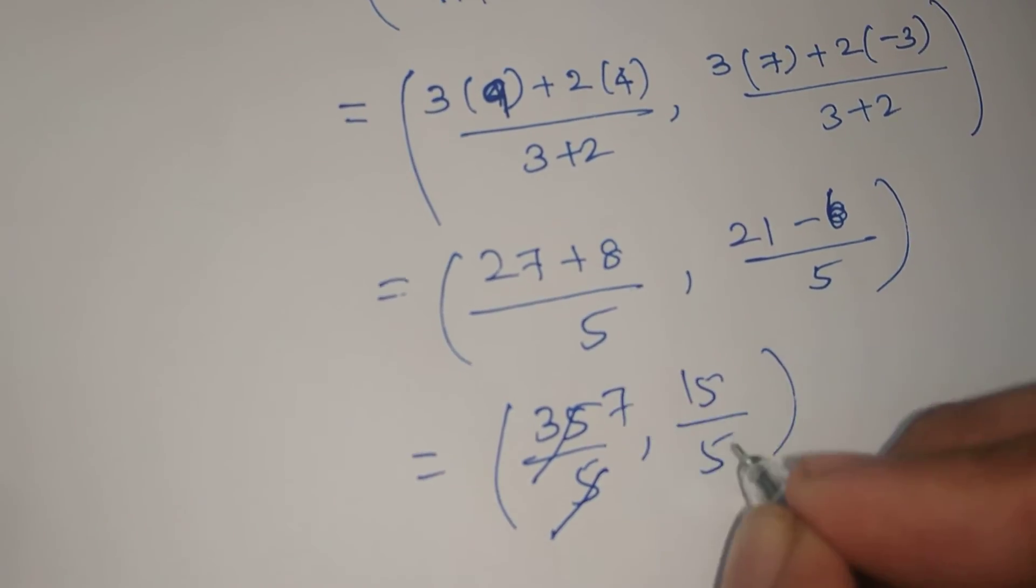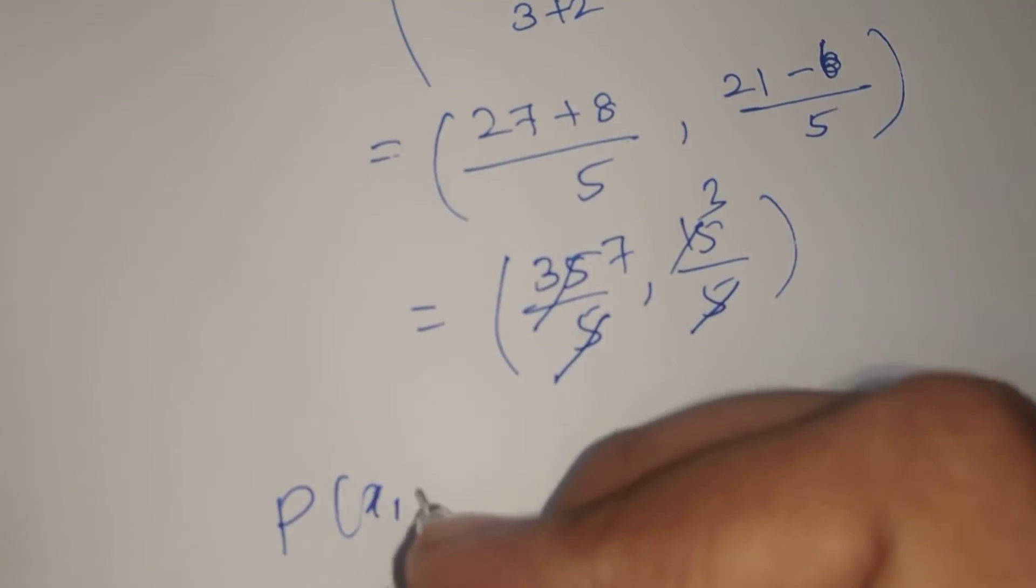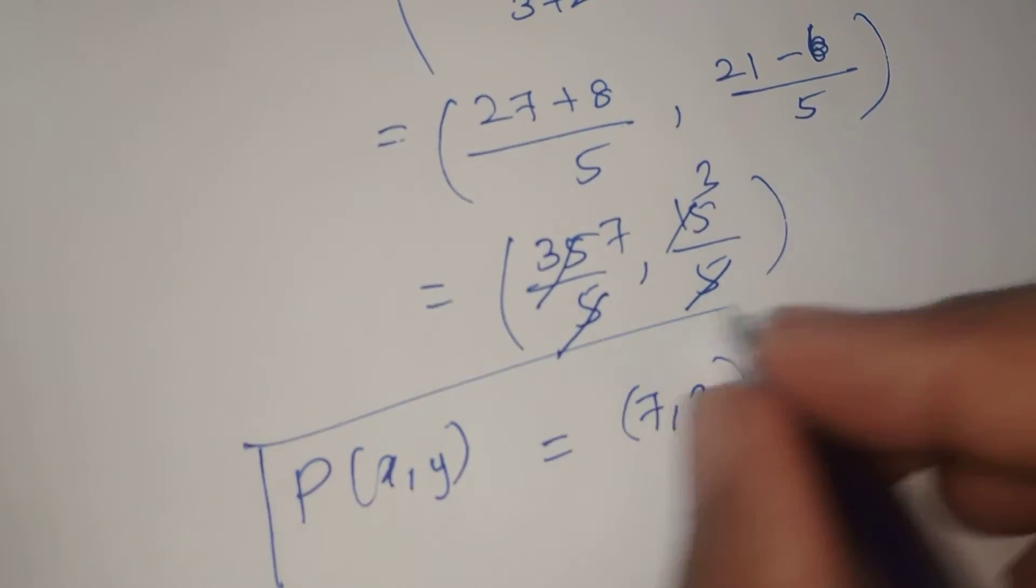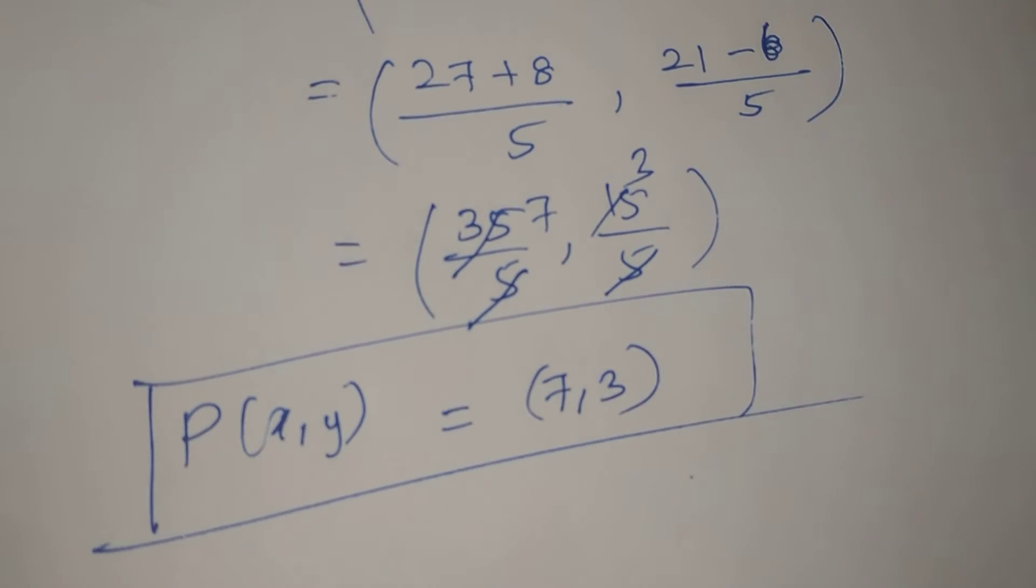So 35 by 5 is 7, and 15 by 5 is 3. Now, P(x, y) is (7, 3). This is the answer.